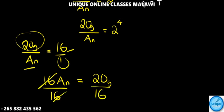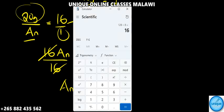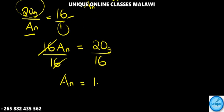To find the final mass, divide both sides by 16. So Aₙ equals 20 divided by 16, which gives us 1.25 grams.